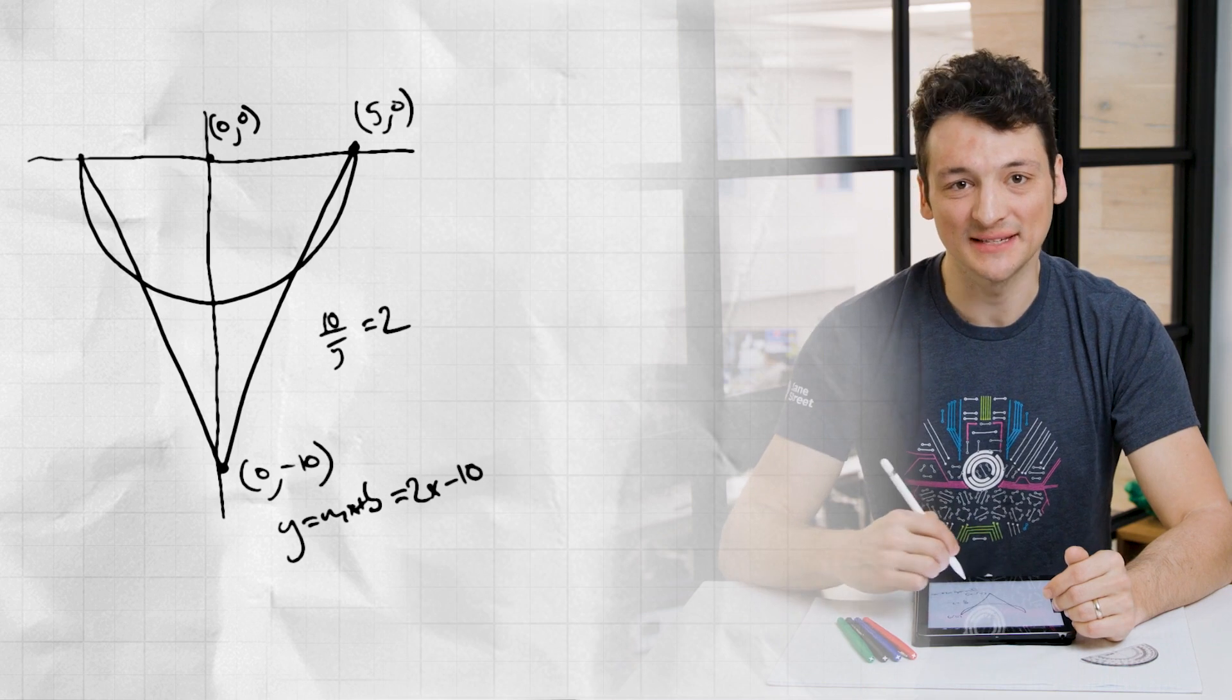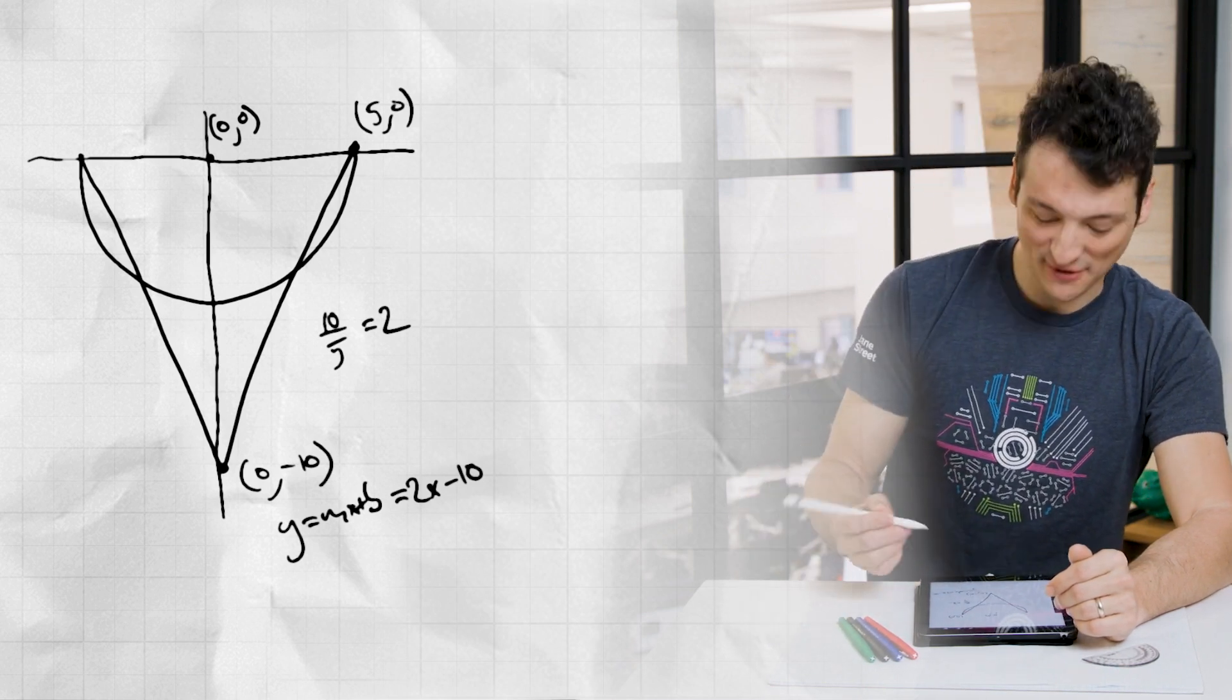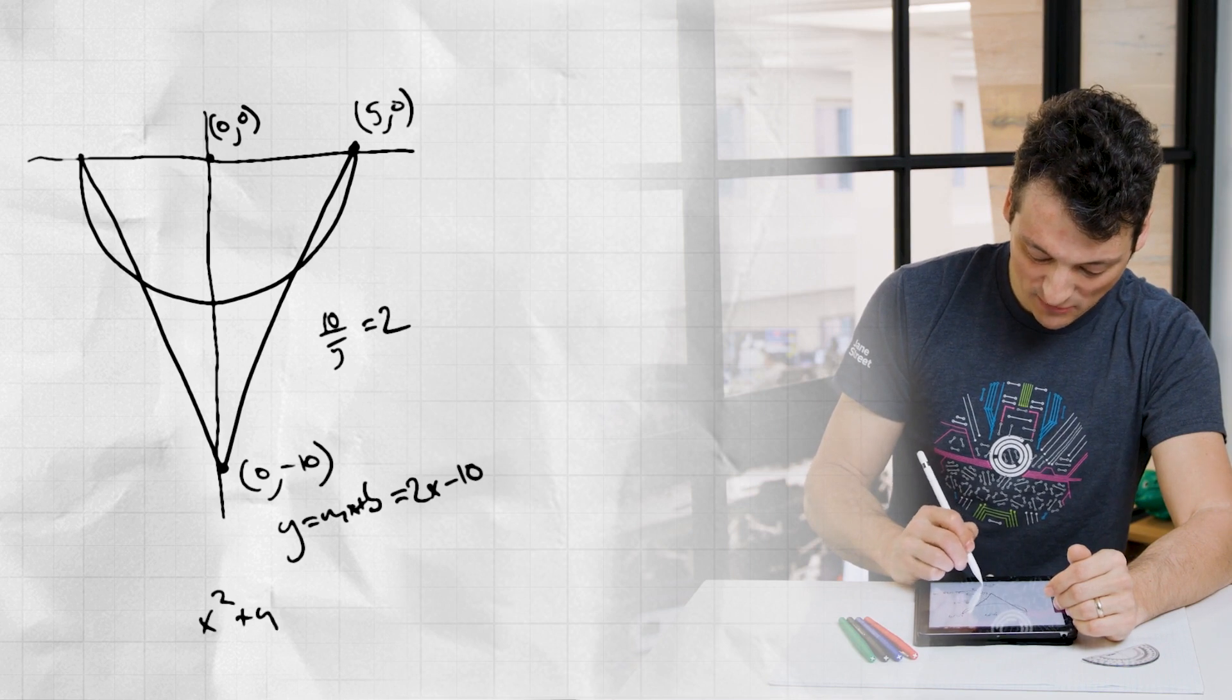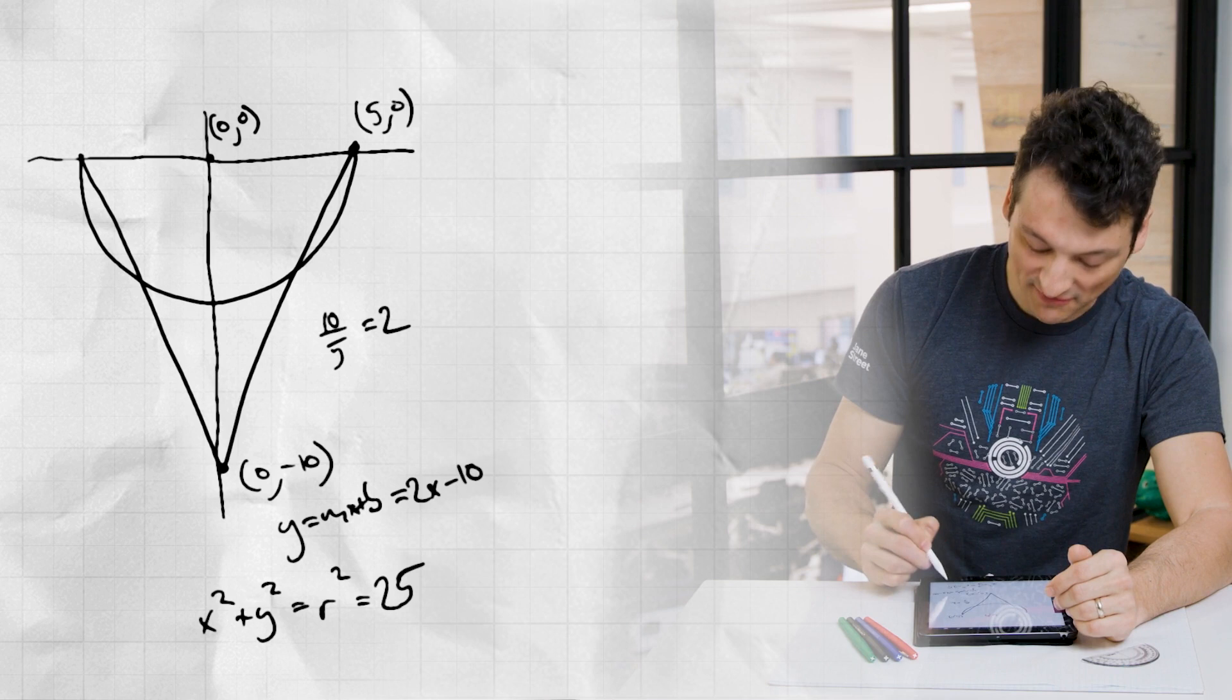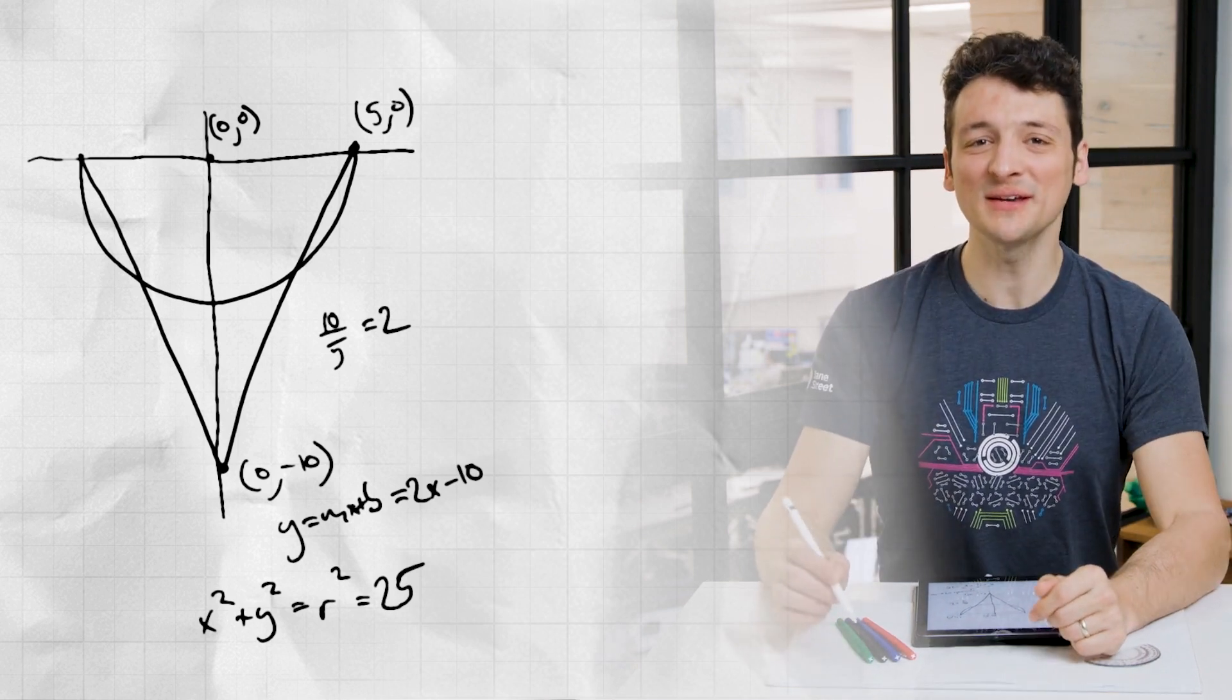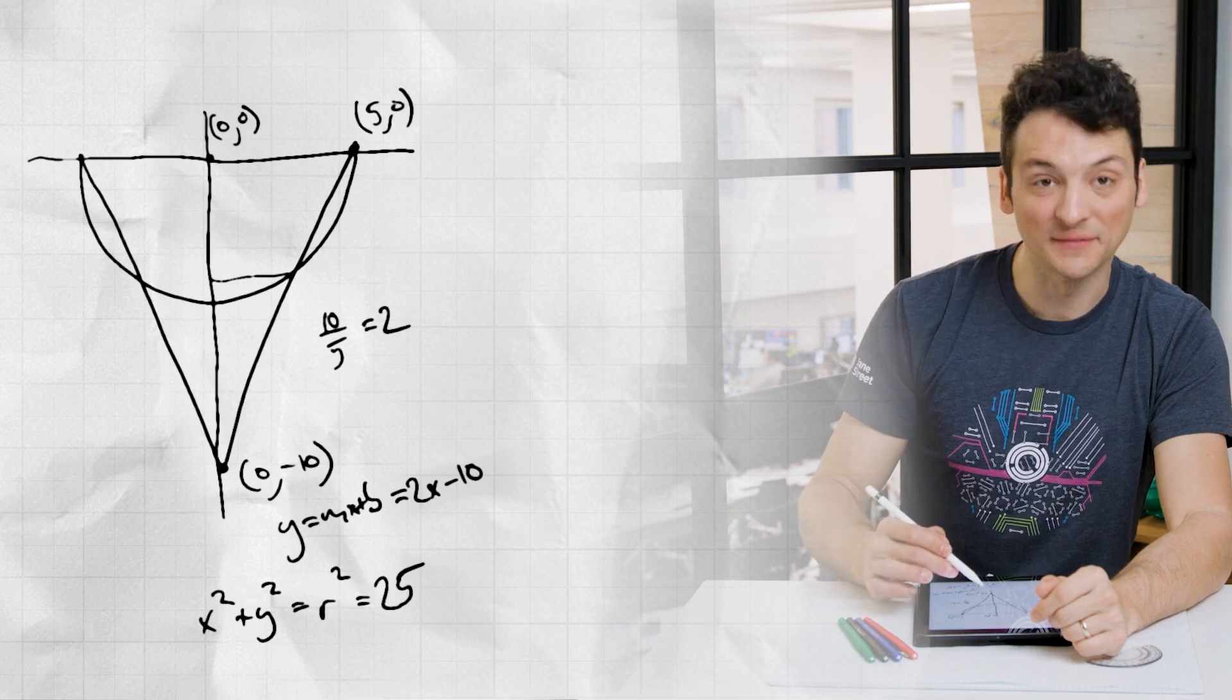The bottom of the sphere is the circle with radius 5 and center 0. This curve has equation x squared plus y squared equals r squared, which is 25.